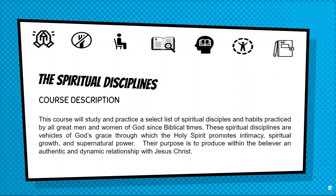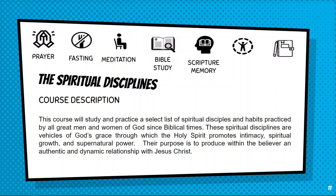Their purpose is to produce within the believer an authentic and dynamic relationship with Jesus Christ. What are these spiritual disciplines? These are the seven we're going to cover. Looking at the icons: if you guessed that the set of hands represents prayer, you're right. Prayer is the first. Fasting is the second. Meditation — also known as devotions — will be the third. Bible study is next. Then scripture memory. Retreat — also known as silence and solitude. And then journaling. These are the seven spiritual disciplines we'll cover in this course.